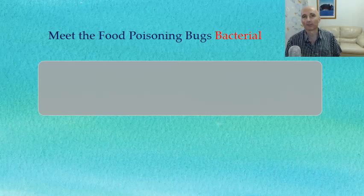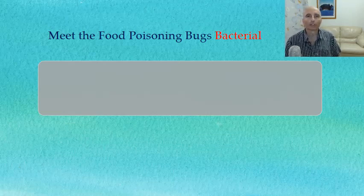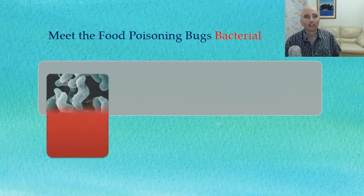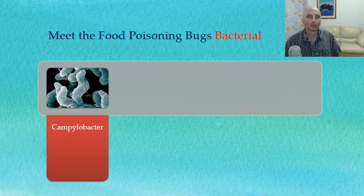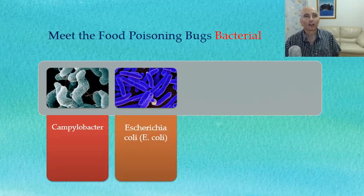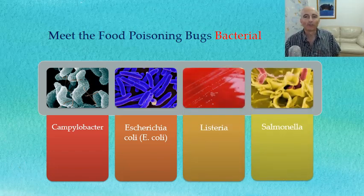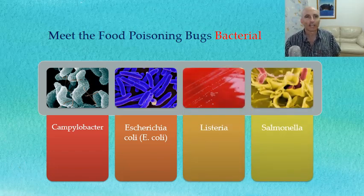Let's meet the food poisoning bugs. We're going to look at the bacterial bugs first. These are: Campylobacter, E. coli, Listeria, and Salmonella.